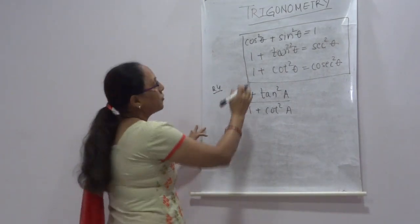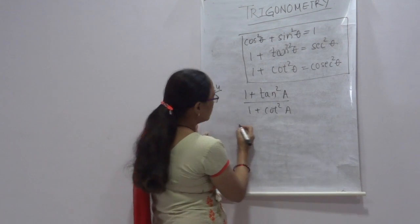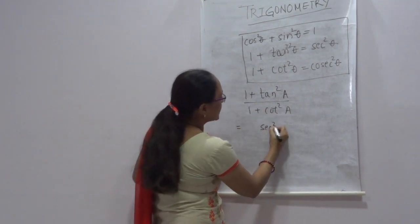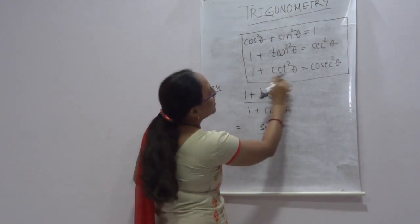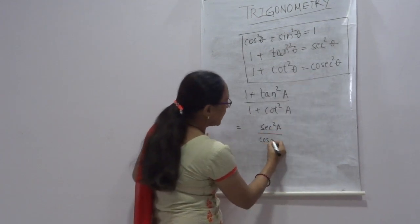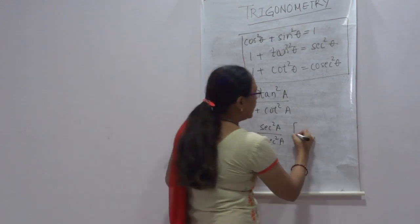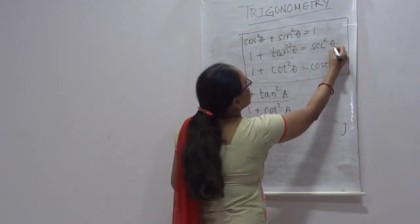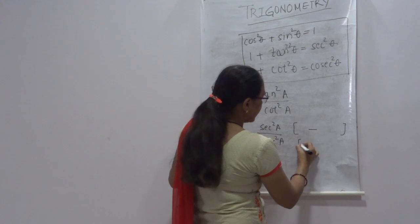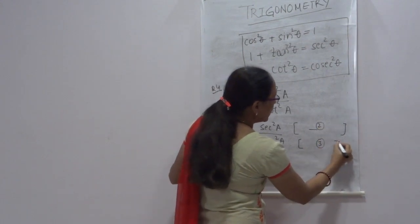See — what is the identity? 1 + tan²θ is sec²θ. So here we can write sec²A. And what is 1 + cot²A? It is cosec²A. Identity number 2 is written in the numerator and identity number 3 is written in the denominator.